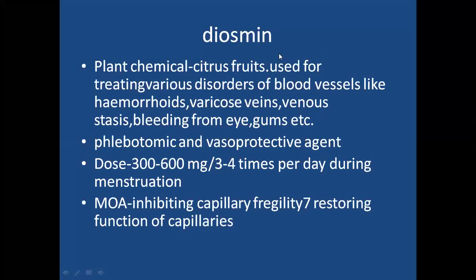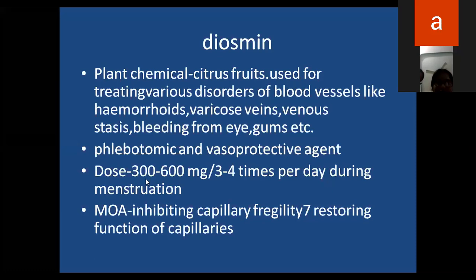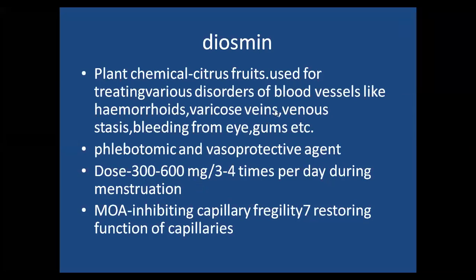Diosmin is a plant chemical present in many citrus fruits and is used for treating various disorders of blood vessels like hemorrhoids, varicose veins, venous stasis, and bleeding from eye and gums. Diosmin is a vasoprotective agent. The dose is available as 300 to 600 milligrams tablets, used three to four times per day during menstruation. Nowadays diosmin is being combined with other drugs like tranexamic acid and mefenamic acid. Its mechanism of action is it decreases capillary fragility and restores the function of capillaries.